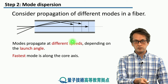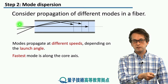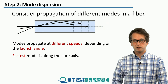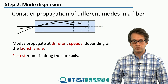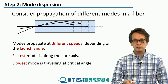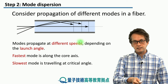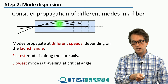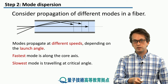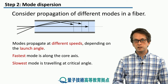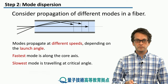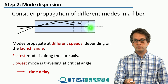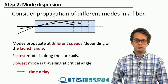The fastest mode, as you can clearly see, travels directly down the fiber. This is known as the axial mode, because it travels down the axis of the fiber. The slowest mode is the one that is incident on the cladding just at the critical angle, meaning it just gets internally reflected.